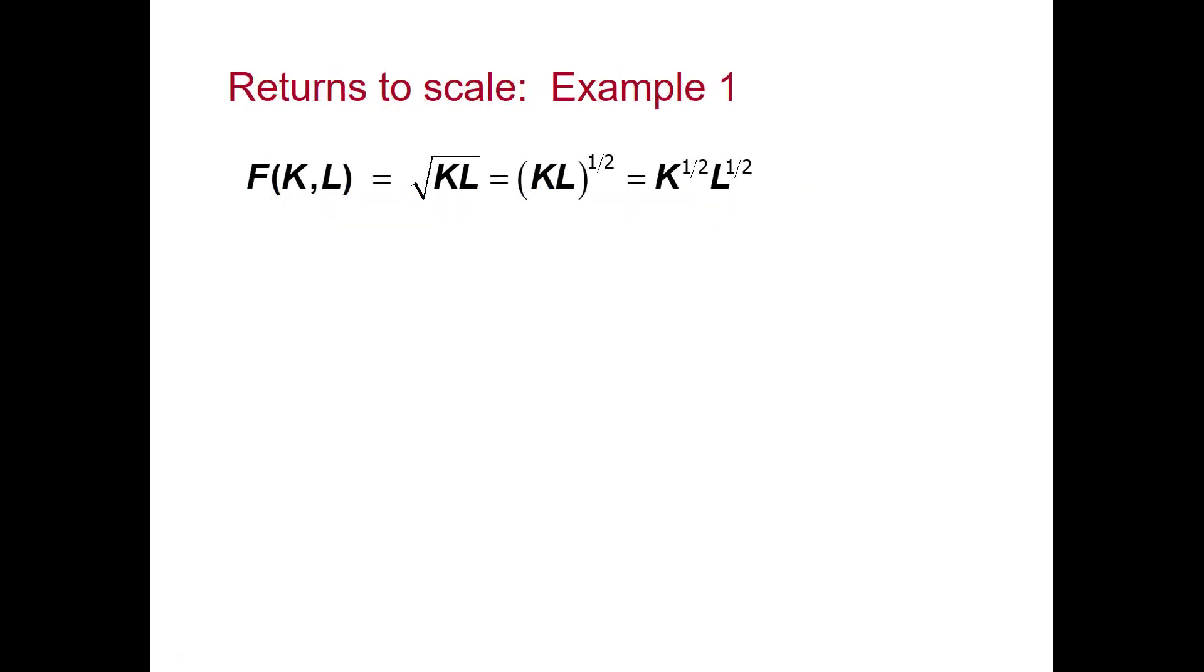Our first example has the production function the square root of K times L. That's just equal to K to the half times L to the half.